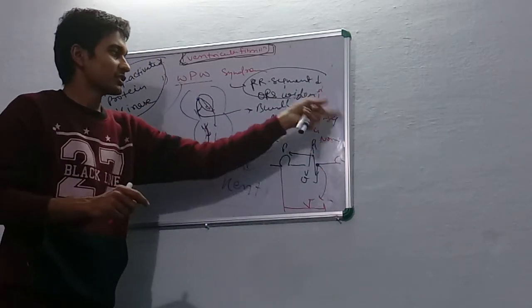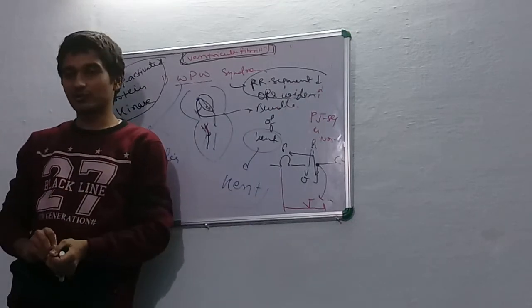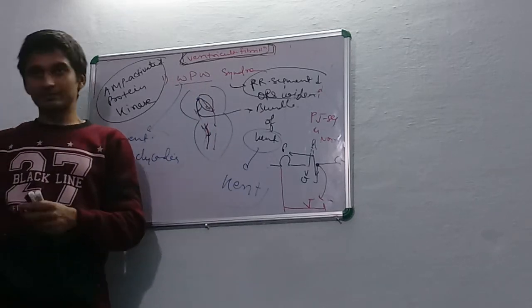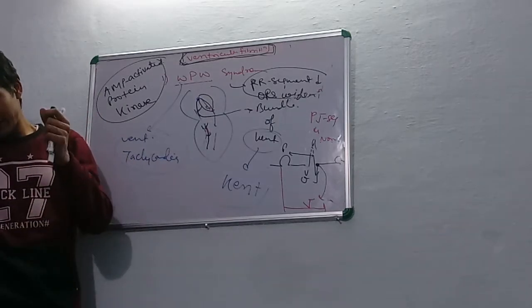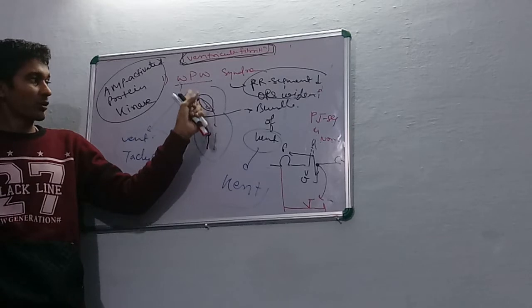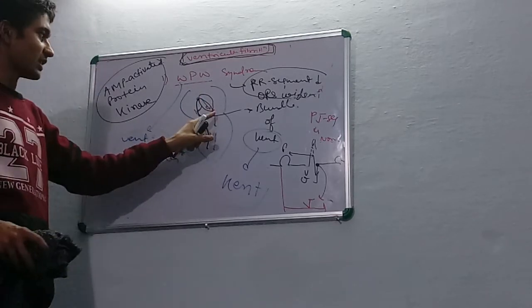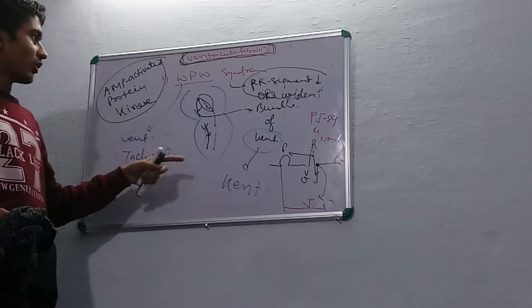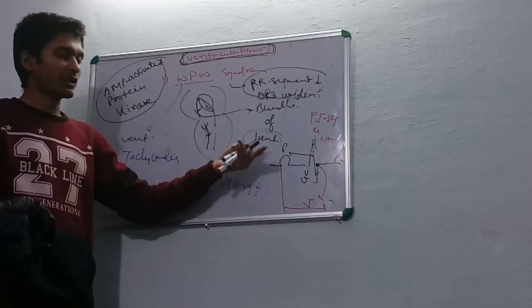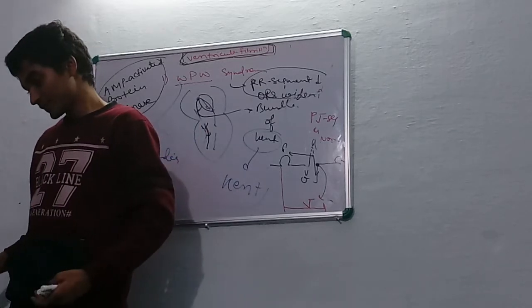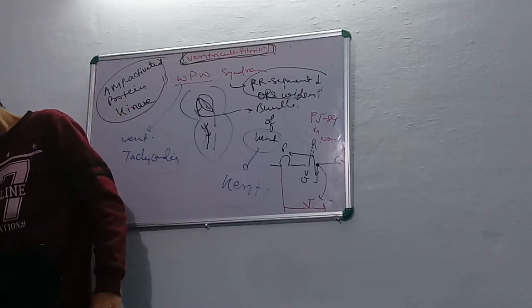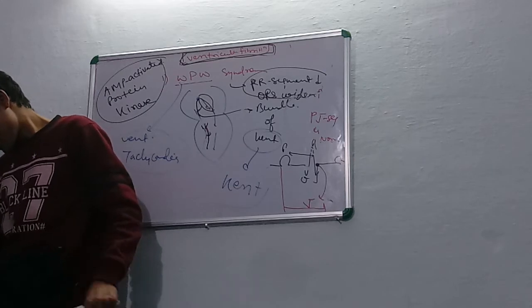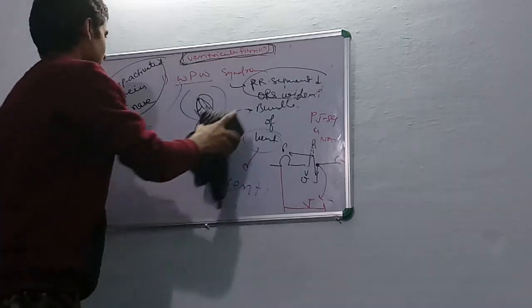This much you have to remember about WPW syndrome. There is a mutation in AMP-activated protein kinase which is responsible for abnormal formation of the accessory bundle. PR segment is short, QRS is wide, but PJ segment is normal.